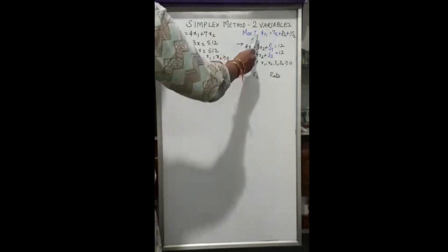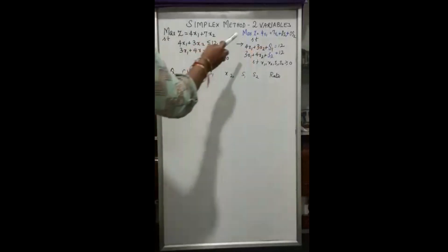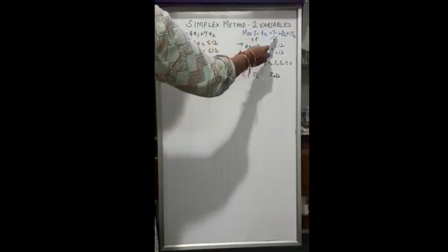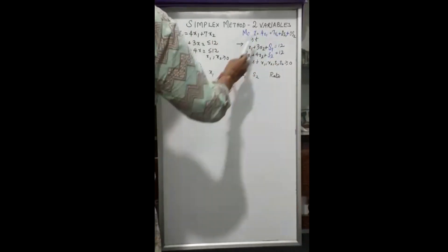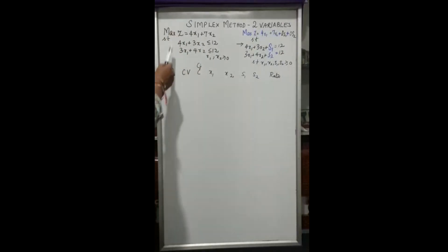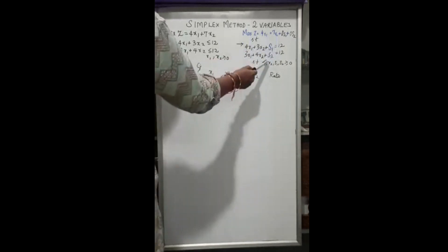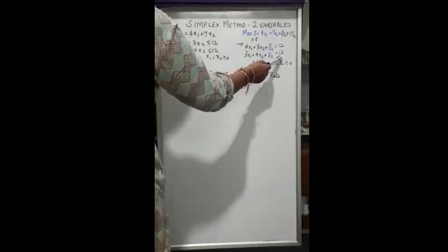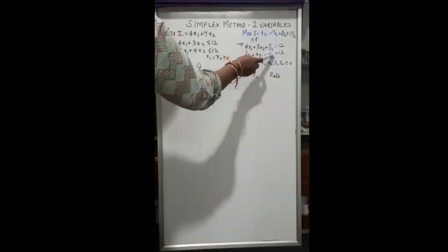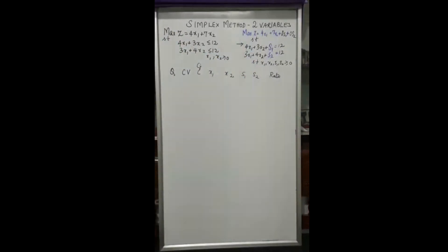We bring the problem to a suitable form by introducing slack variables s1 and s2. The objective function becomes: maximize Z = 4x1 + 7x2 + 0s1 + 0s2. Adding a slack variable to each constraint makes it equal to 12. We write 0s1 + 0s2 in the objective function to account for these slack variables.